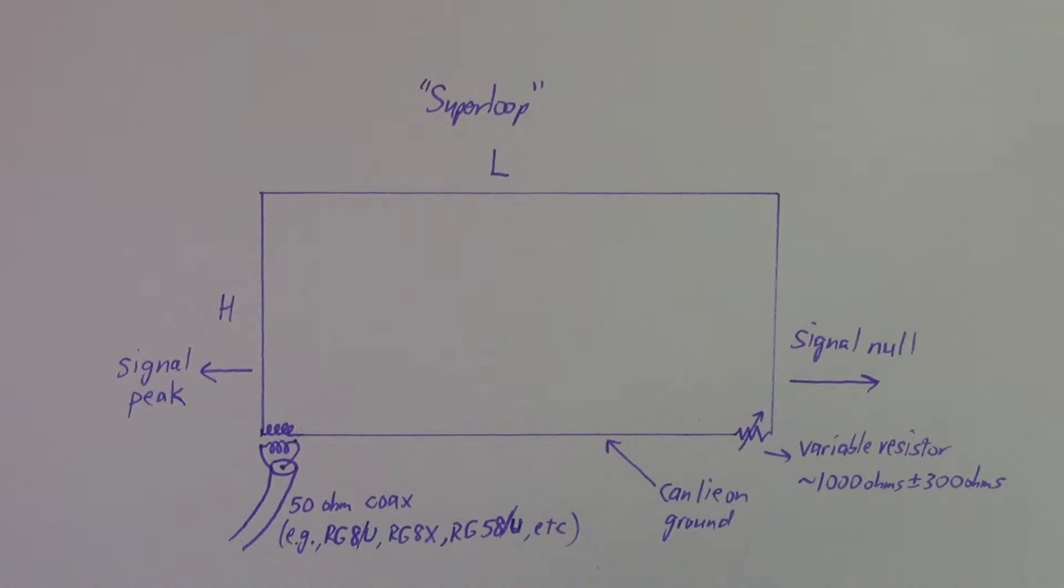It also, because of the cardioid pattern, gives you a fairly broad receiving pattern which can be useful in situations where there's a lot of variability in propagation such that you might get a particular station in one direction and then that may fade out or another station in a slightly different direction will fade in.